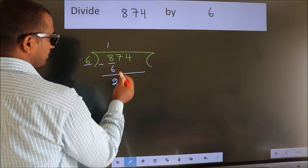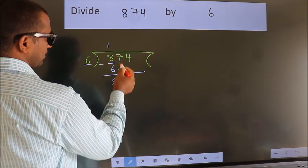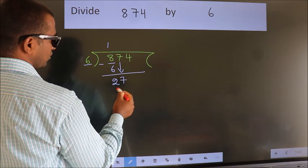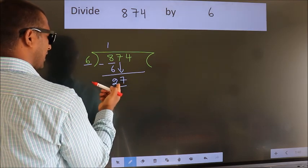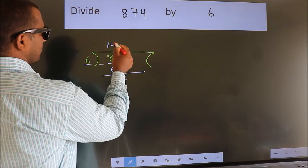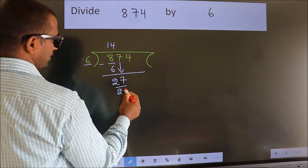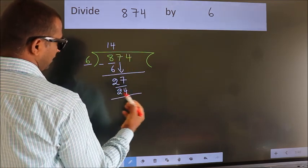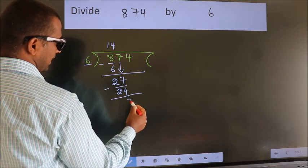After this, bring down the beside number, so 7 down, so 27. A number close to 27 in 6 table is 6 times 4 is 24. Now we subtract, we get 3.